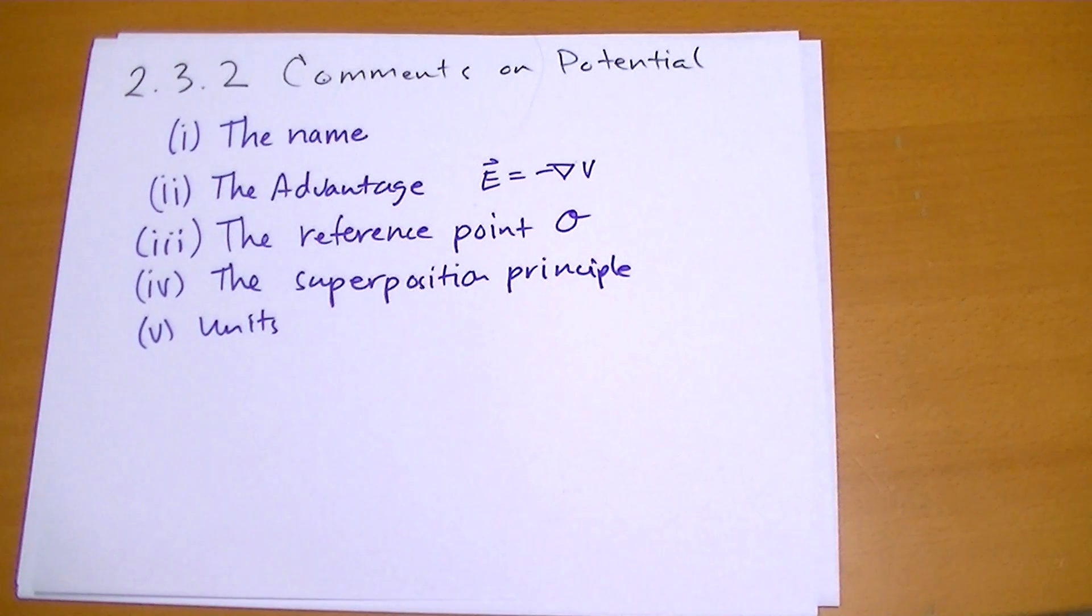When you choose a different value of O, you're going to change the potential by some scalar amount. You're going to increase it or decrease it based on what the value of the new O is versus the value of the old O, which makes life simple. But just make sure you're consistent with what O you're choosing.